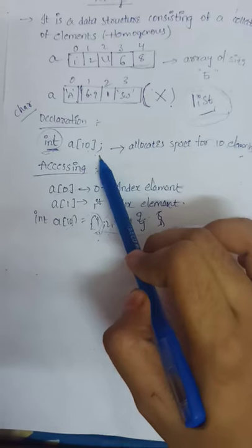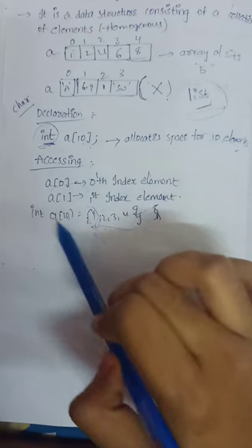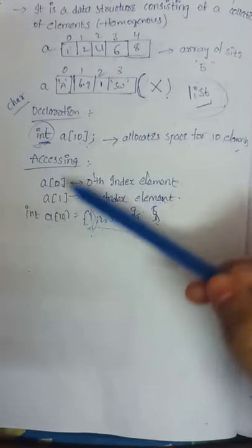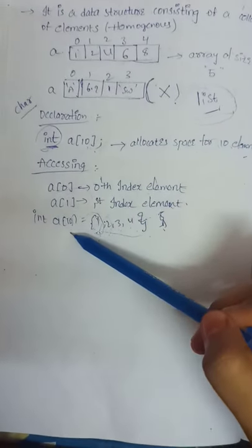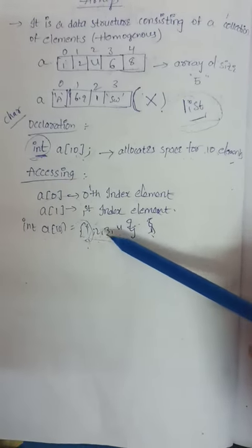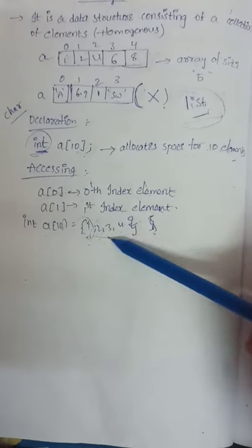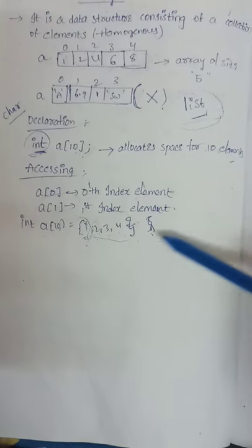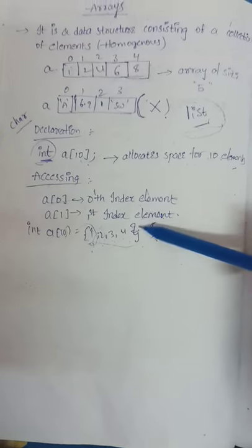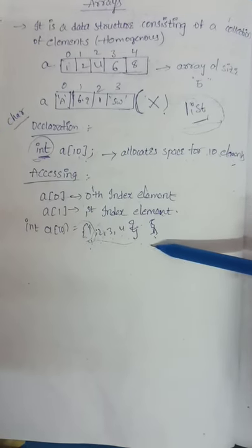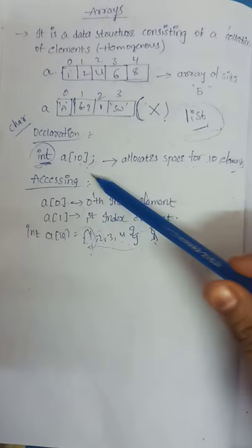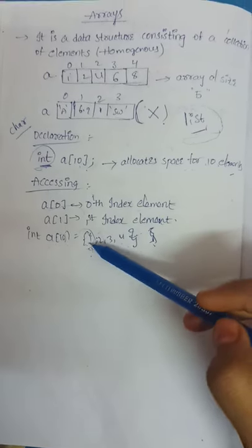This is the declaration part. After declaring an array, how can we access the elements? Before going to that, how can we initialize an array? See this: int a[10] = {1, 2, 3, 4}. It means I am only storing 4 elements in an array. The remaining positions of the array would have garbage values. The compiler gives those garbage values.